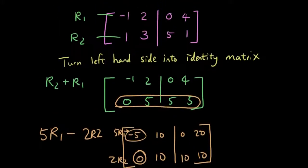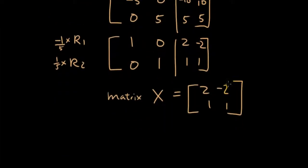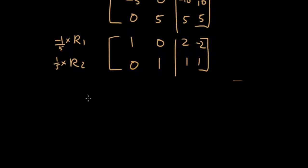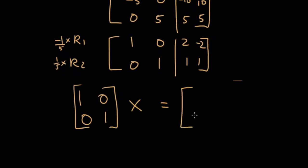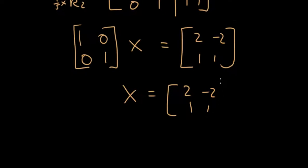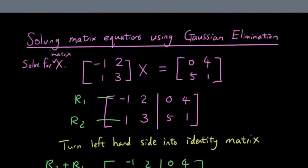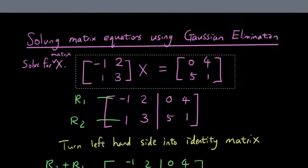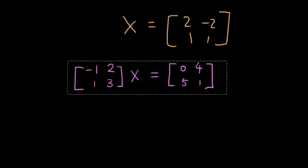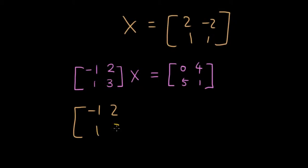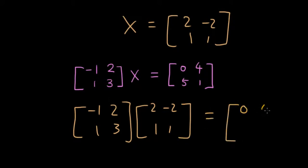Now let's check if I'm right. Actually I missed a step — I should show you that if I separate this now, it'll be one, zero, zero, one times x equals two, negative two, one, one. So therefore matrix x equals two, negative two, one, one. In order to show you that it's true, I'm going to cut down this question and put it down the bottom. Let's try it out: negative one, two, one, three multiplied by two, negative two, one, one, and see if it equals zero, four, five, one.